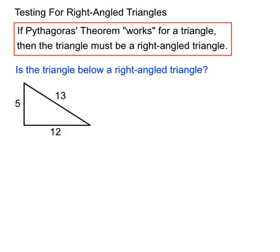Okay, is this triangle below a right angled triangle? We're asked to test to see if this is a right angled triangle. There's no right angle symbol on it just yet, but we might be able to add one later if we decide it's a right angled triangle. So let's see if Pythagoras' theorem works on this triangle. Let's see if these numbers work.